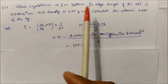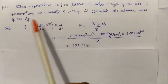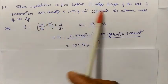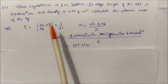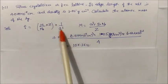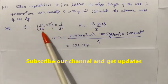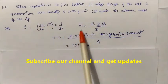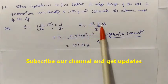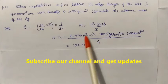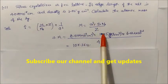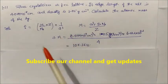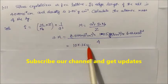Silver crystallizes in an FCC lattice. If the edge length of the cell and density are given, we calculate the atomic mass of silver using the formula: density = (Z × M) / (a³ × Nₐ). Here, a is the edge length, density is given, Avogadro's number is known, and Z = 4. On solving, the atomic mass of silver comes out to be 107.36 u.